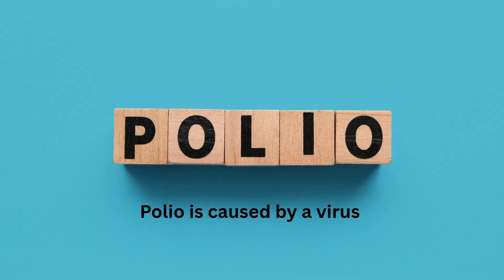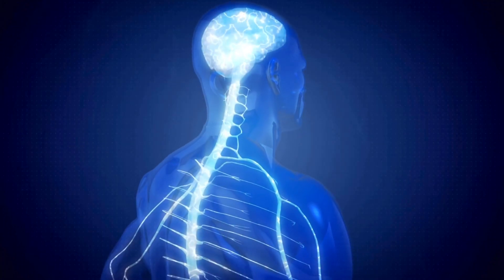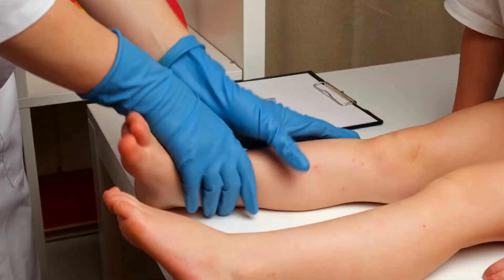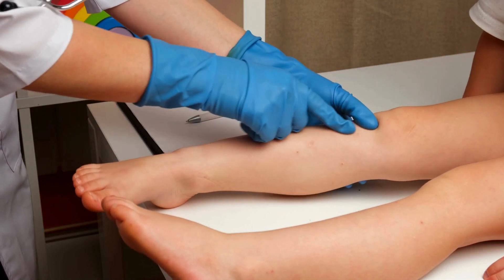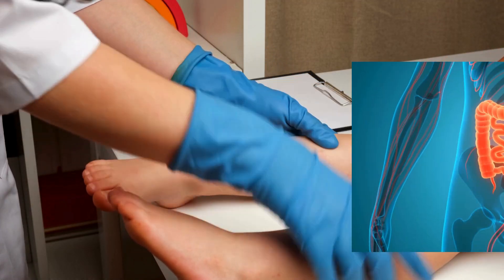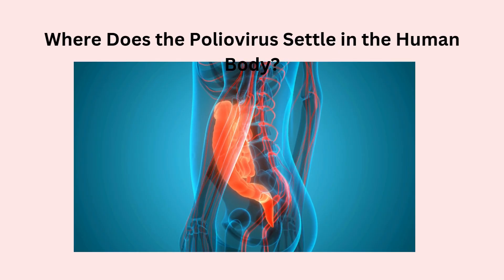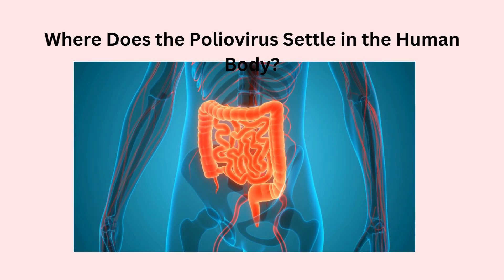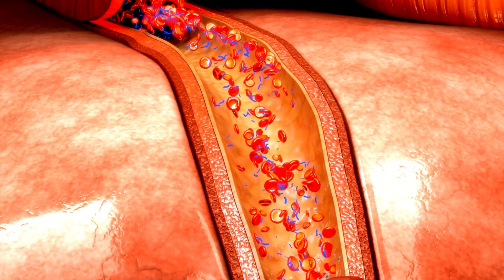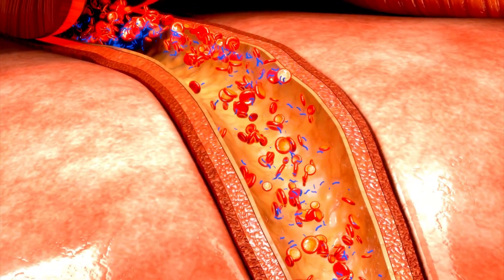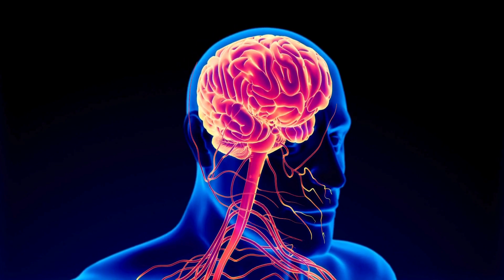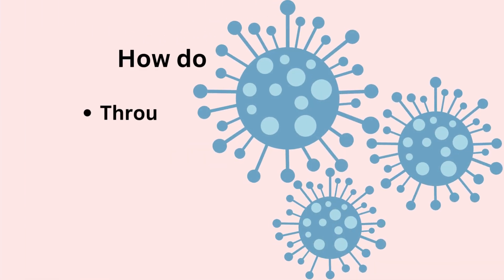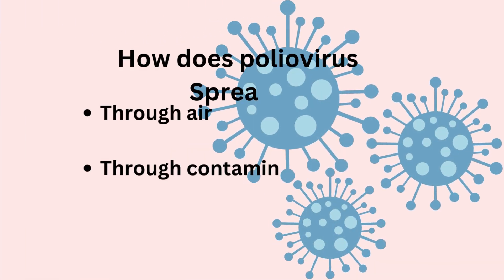Polio is a highly contagious infectious disease caused by the poliovirus. It primarily affects the nervous system, leading to muscle weakness and, in severe cases, permanent paralysis of legs. After entering the body, the poliovirus first multiplies in the throat and intestines. From there, it can enter the bloodstream and travel to the nervous system, where it attacks nerve cells responsible for muscle movement. It spreads through air, contaminated food, and water.